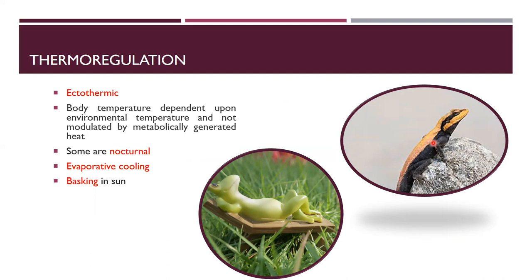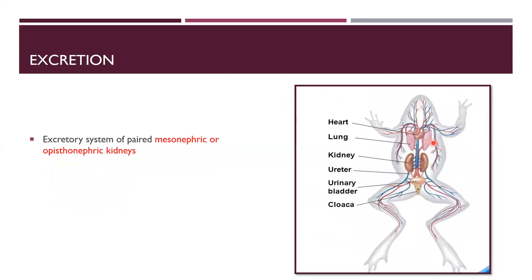For excretion, the system is composed of paired mesonephric or opistonephric kidneys. The kidneys are associated with the ureter, which leads to the bladder, which leads to the cloaca. The main nitrogenous waste of amphibians is urea. However, for larvae — which spend their life in water — the nitrogenous waste is ammonia. For terrestrial amphibians, the nitrogenous waste is urea.